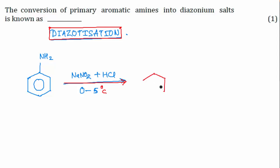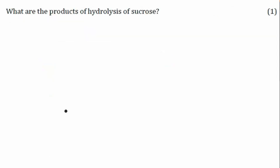The product is PhN2+ and Cl−. So this process is known as diazotization. Next, let's move to the next question: what are the products of hydrolysis of sucrose?